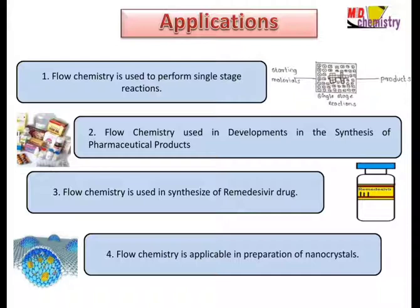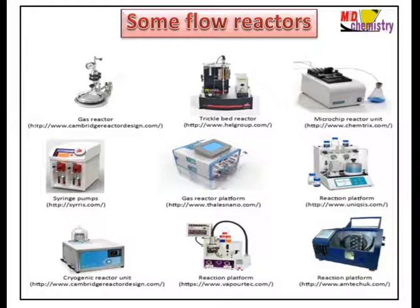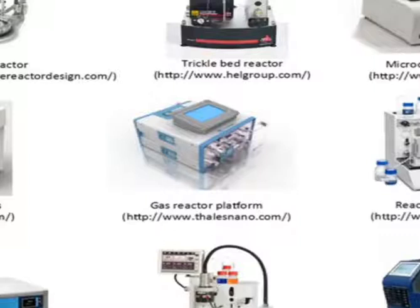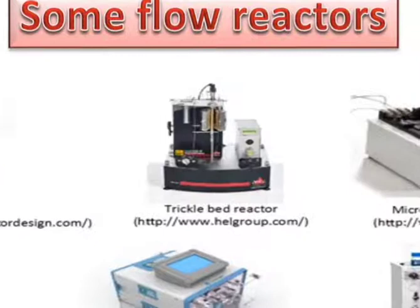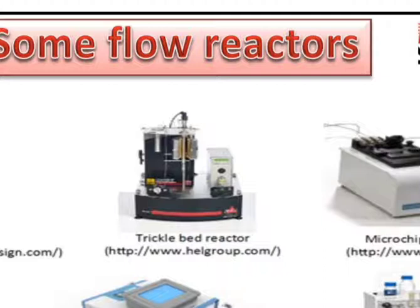Fourth application: flow chemistry is applicable in the preparation of nanocrystals — such as salt nanoparticles, oxide nanocrystals, metal alloys nanocrystals, and quantum dot (QD) materials. Examples of flow reactors include plug flow reactors with cylindrical geometry, column reactors packed with specific materials like catalysts or reagents, gas reactors — after whose development gas-phase reactions became much easier — and trickle bed reactors used for triphasic processes involving gas, solid, and liquid reactions.